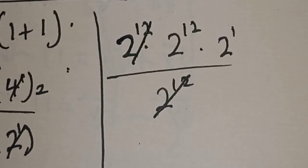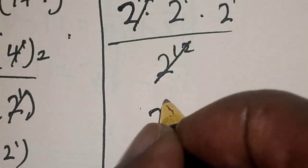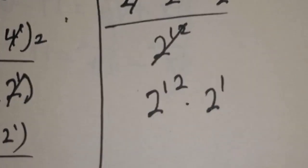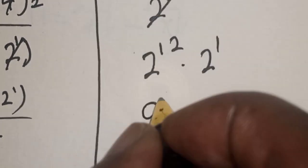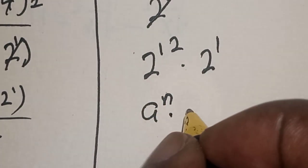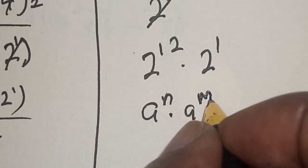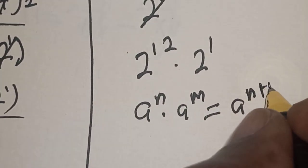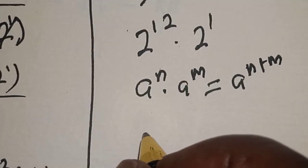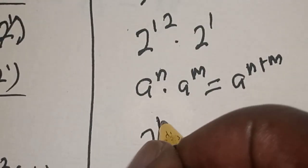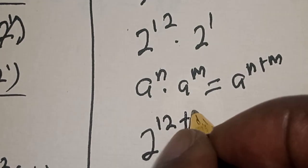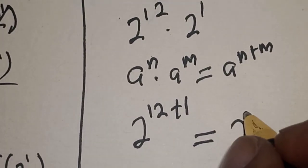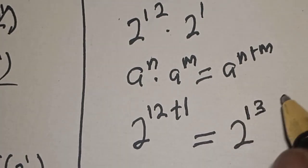One 2 to the power 12 cancels, leaving us with 2 to the power 12 multiplied by 2 to the power 1. Using the exponent rule: 2 to the power n times 2 to the power m equals 2 to the power n plus m. This gives us 2 to the power 12 plus 1, which equals 2 to the power 13.